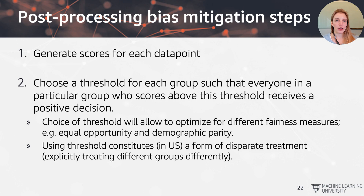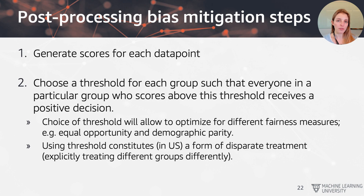To get more practical about how we can modify results algorithmically: step one is to generate a score for each data point — that could be a probability score or a continuous numerical value in the case of regression. Then, in the classification example, we choose a threshold for each group or sub-population in the dataset such that everyone in a particular group who scores above that threshold receives a positive decision.